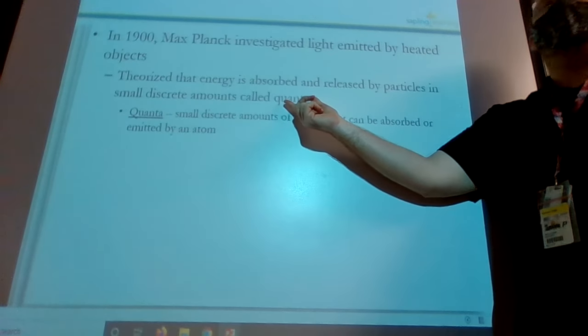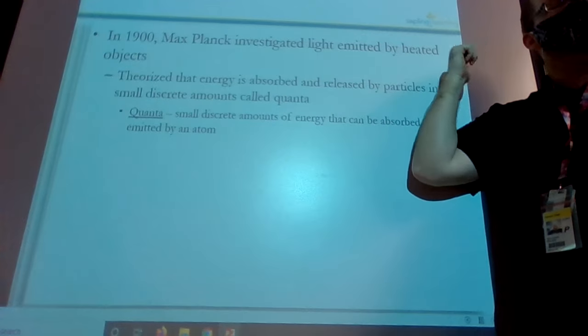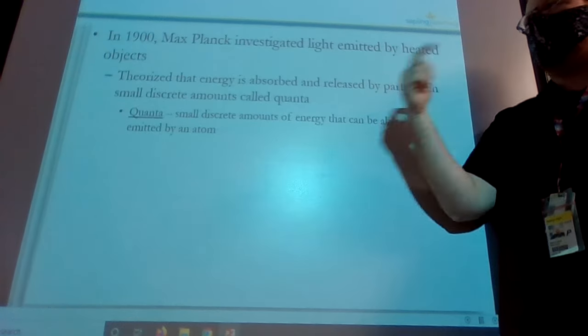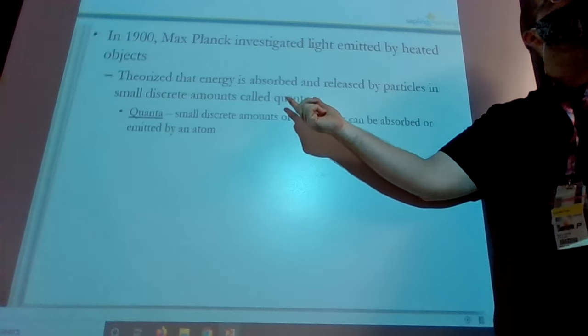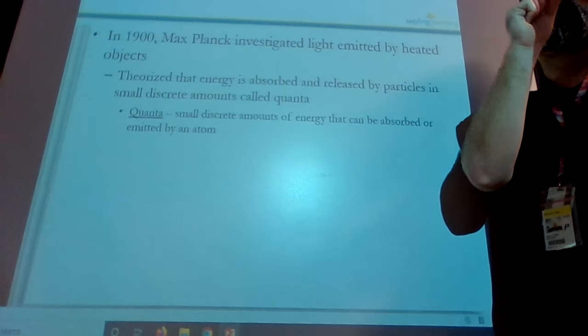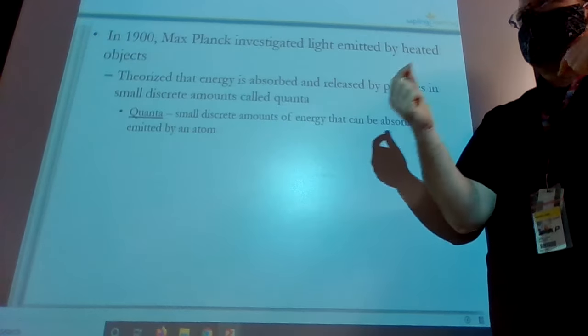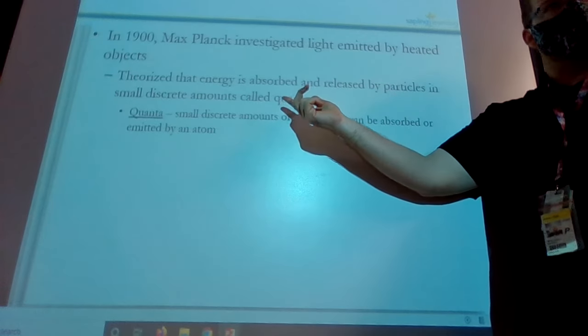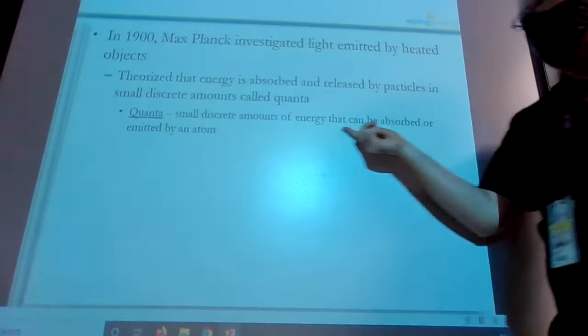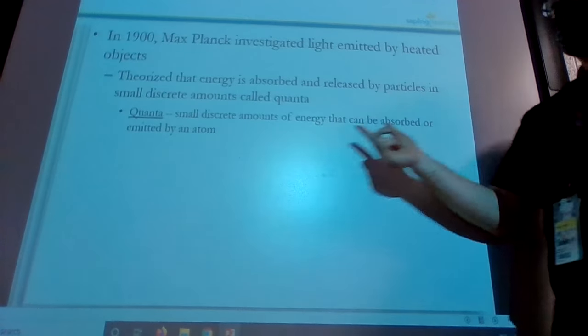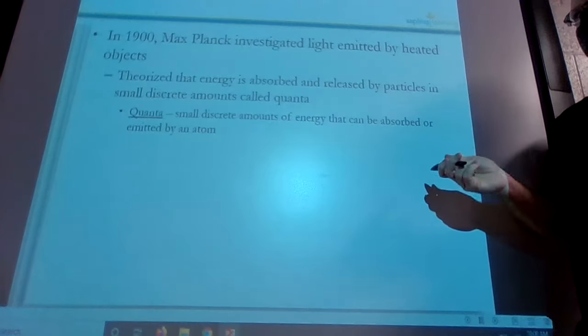He theorized that energy is absorbed and released by particles in small, discrete amounts he calls quanta. And if you get into upper level physics, or maybe even he mentions it in the physics class across the hall, when we talk about quantum physics, that's what they mean by quantum. It's little individual pieces of things, quanta. Almost like the word quantity, right? So a certain number, a small, discrete amount of energy that can be absorbed or emitted by an atom. That is a quanta.